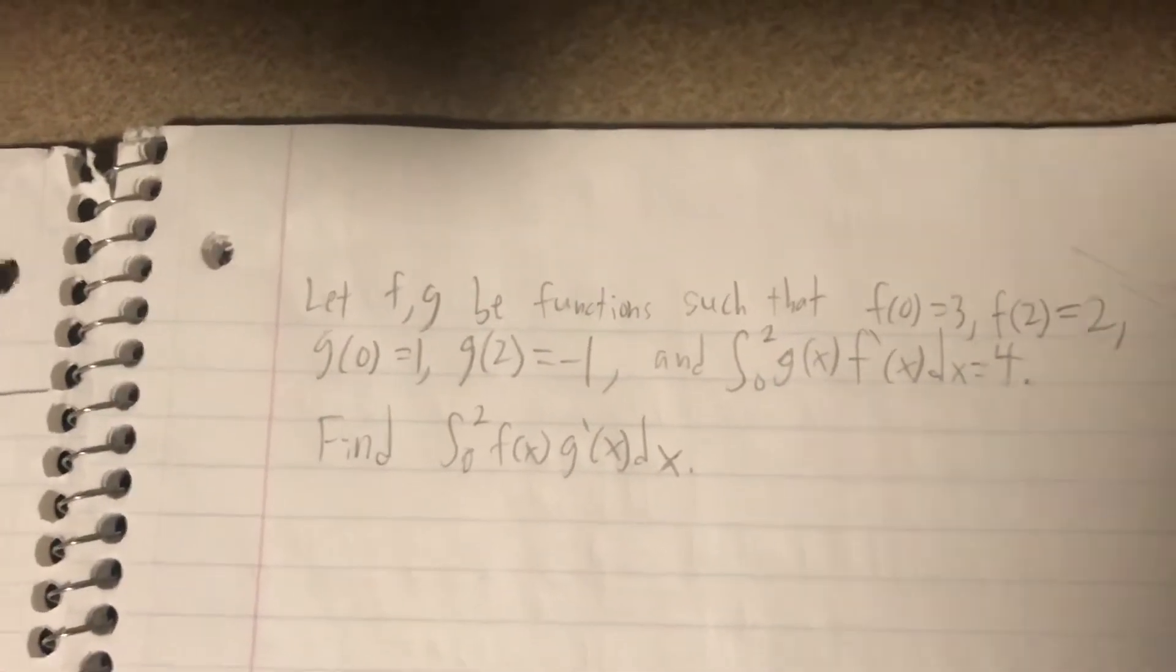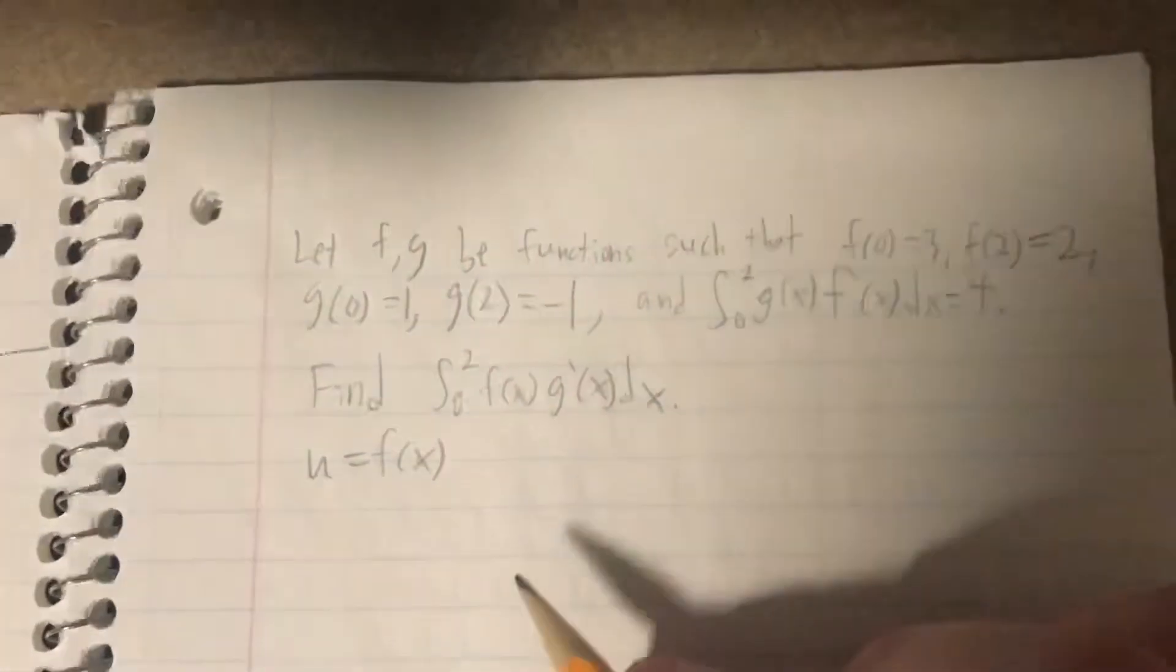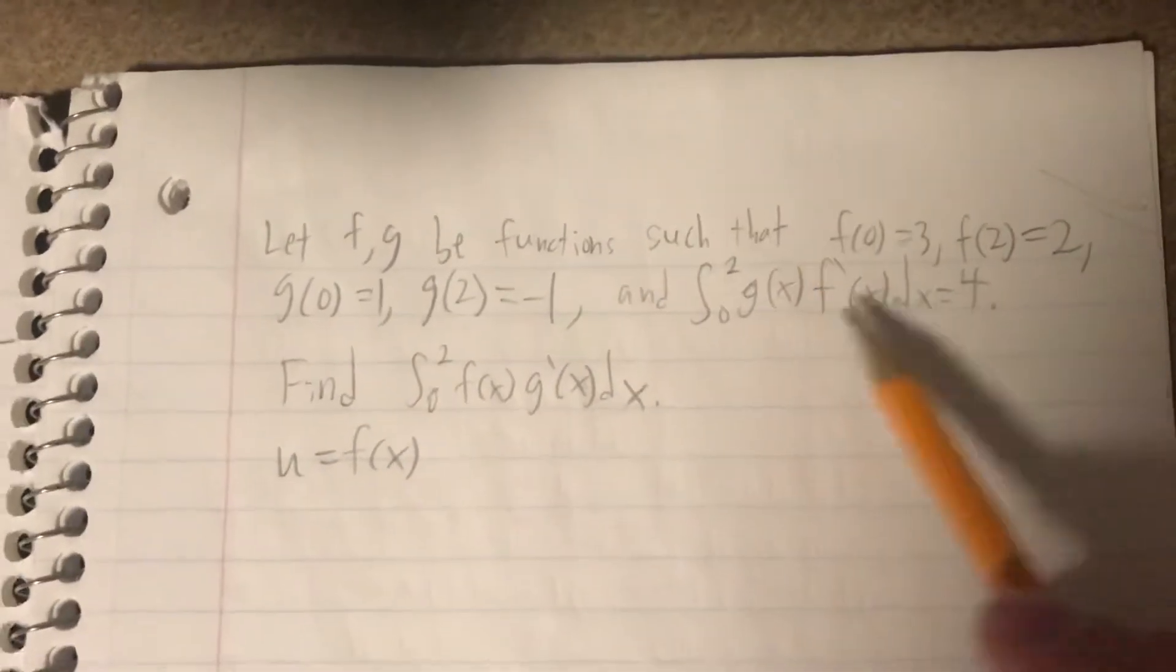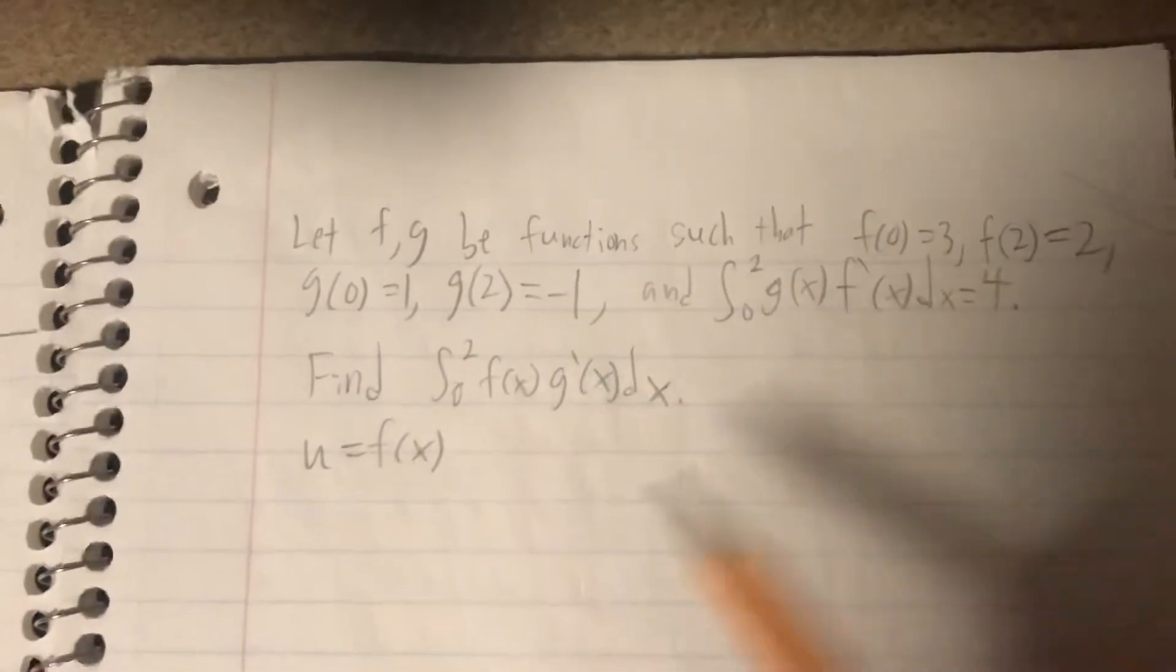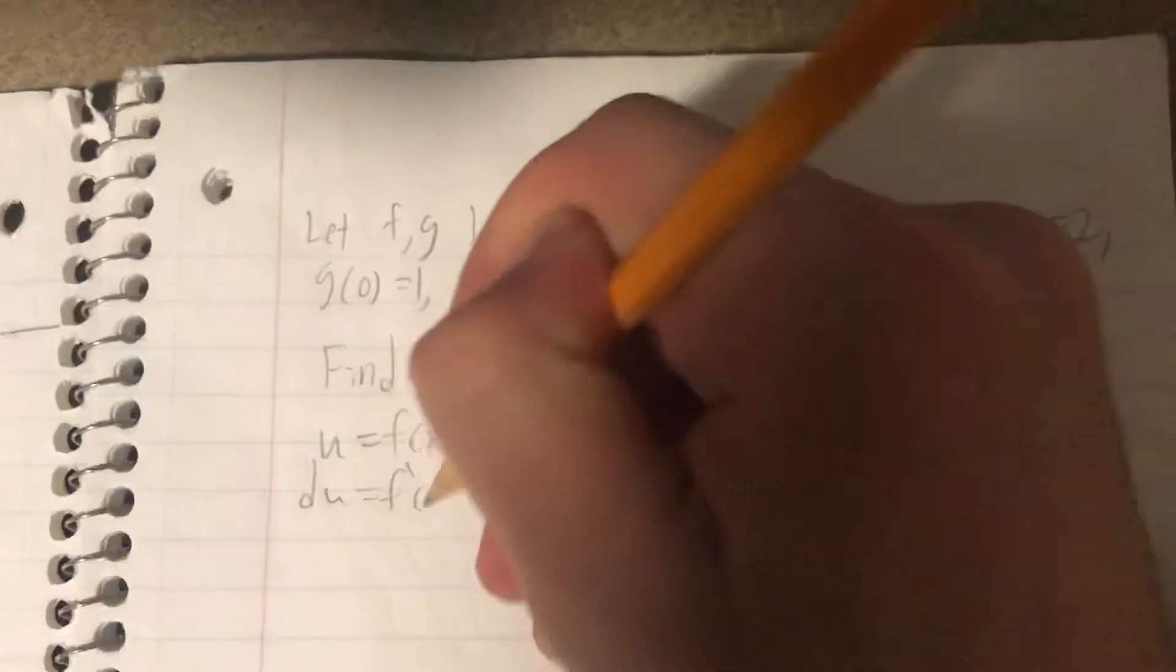So let's try that. Now I'm going to set u equal to f of x. And the reason why I'm choosing that is because given the facts we're given above, we do have f prime of x mentioned here. So when we take du, that gives us f prime of x dx.